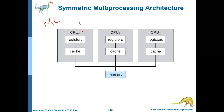CPU zero is placed in a separate chip, CPU one is placed in a separate chip, and CPU two is placed in a separate chip. That is, each of these processors has its own chip. So this is an example of a multi-chip system — a multiprocessing system which uses multiple chips, meaning for each processor it uses a separate chip.